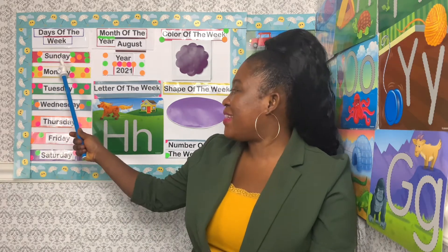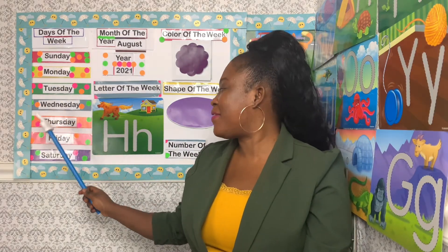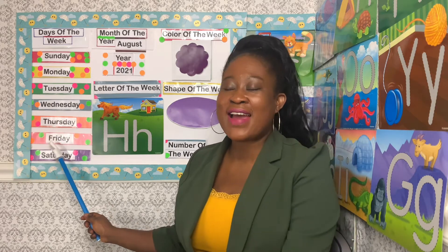Yes friends, what day is today? Oh, do we need to sing our days of the week song to find out what day is today? Great! All right, then we will do that. So we have seven days in the week and they are: Sunday, Monday, Tuesday, Wednesday, Thursday, Friday, Saturday. There are seven days in the week.